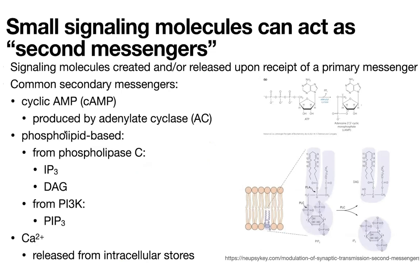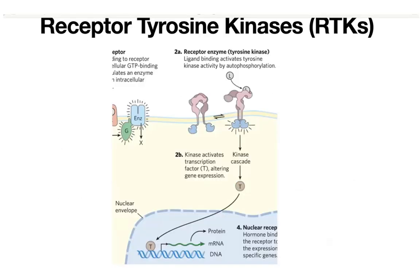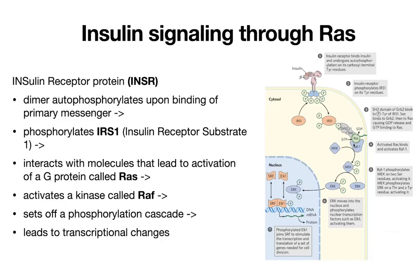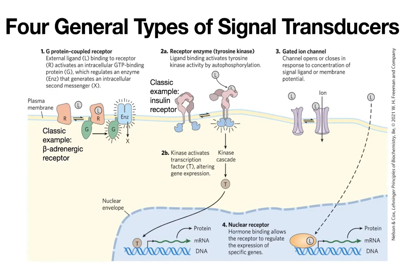We can also have our receptor tyrosine kinases. These are going to function as dimers — the ligand binds and activates autophosphorylation. Those dimers phosphorylate one another and lead to signaling cascades through kinases, as well as pathways that connect through other lipid-mediated functions.